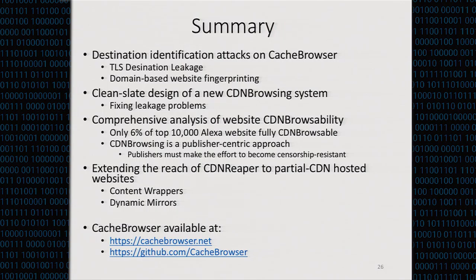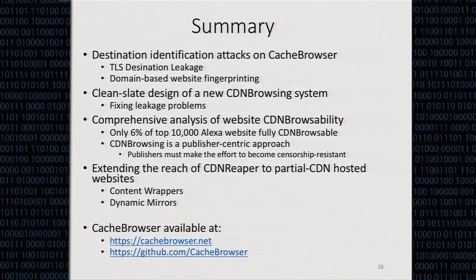Q: Is it possible to cause a single point of failure if censors detect and IP-block the bootstrapper or CDN Reaper services? A: The bootstrapper is itself a CDN-browsable service, so censors can't censor it using traditional techniques like IP filtering without blocking all CDN traffic. The same CDN browsing techniques apply to the bootstrapper itself, unless censors can detect it and perform DDoS attacks. Additionally, CDN Reaper doesn't rely on just one bootstrapping service — communities can create their own bootstrapping services using the same REST API, so there can potentially be multiple bootstrapping servers.